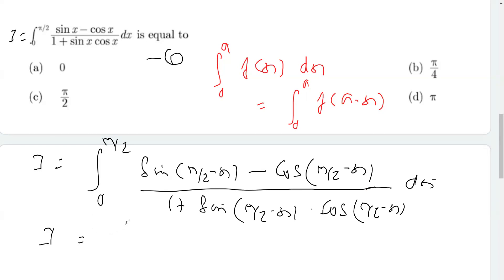Now, from 0 to π/2, sin(90° - θ) is cos θ. So this becomes (cos x - sin x)/(1 + sin x cos x) dx. This is equation 2.